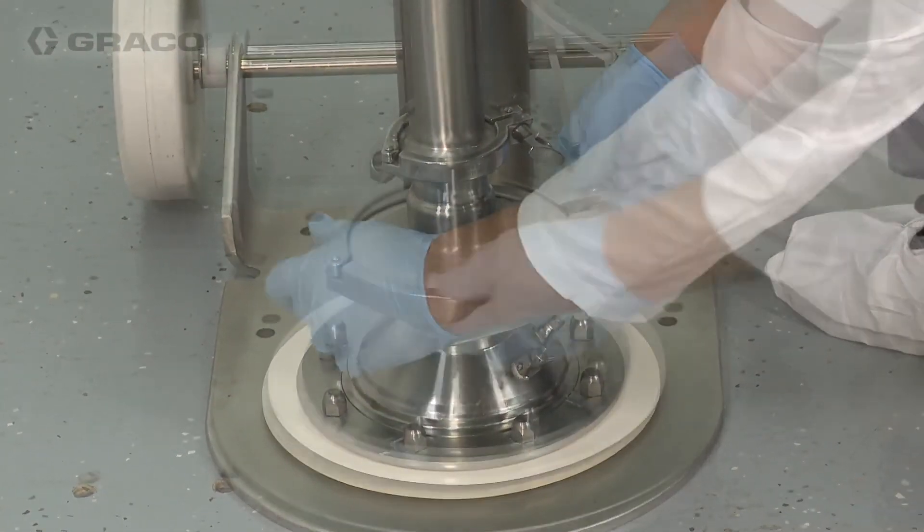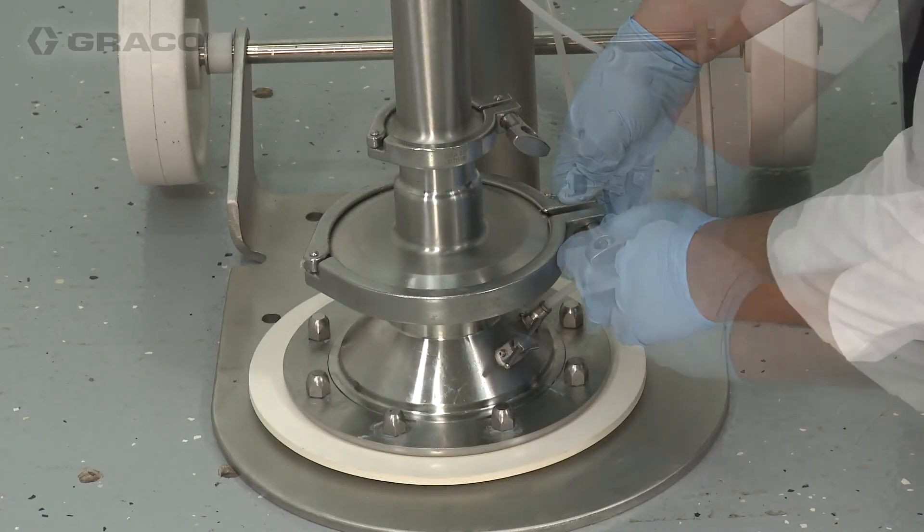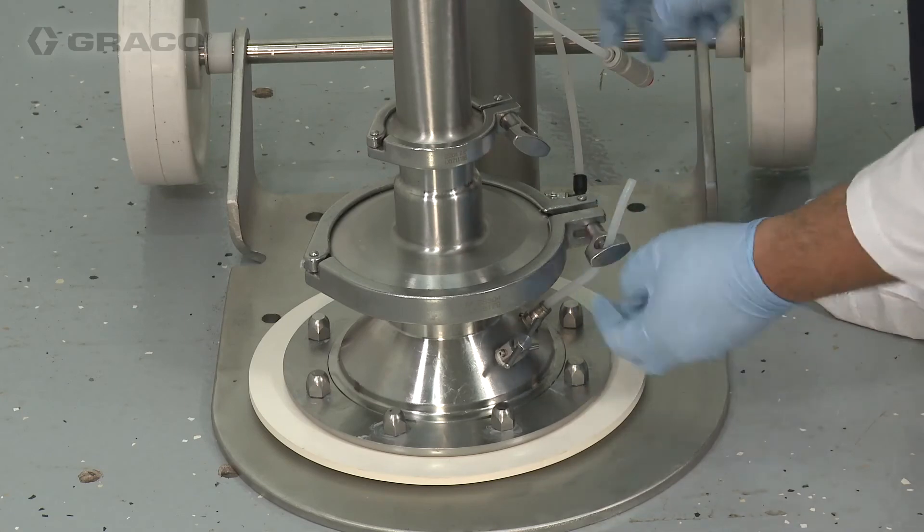Attach the platen to the pump lower at the flange and reattach the blow-off hose to the blow-off port on the platen, routing the hose through the sanitary clamp handle eyelets.